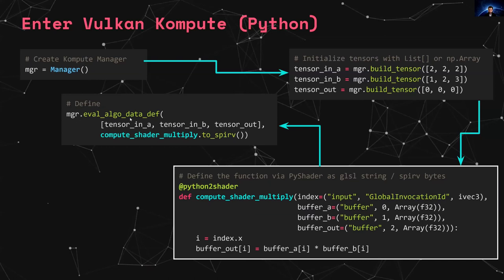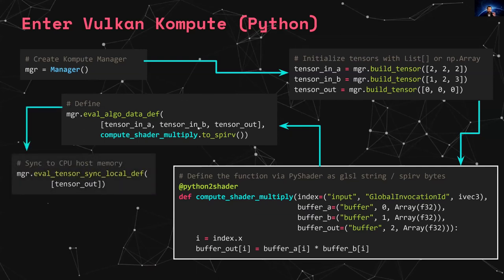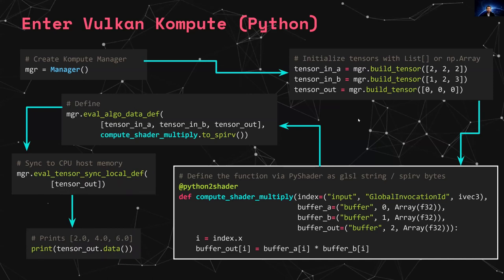This shader runs on the GPU. You run it through the manager, running synchronously using the three tensors and the shader. You can also run it asynchronously for optimizations. Once it's finished running, you copy the data back to make it visible to the CPU and then print it. The output is 2, 4, 6 — that's all there is to it. This is all you need to do the underlying work, though all of that underlying complexity is very useful and relevant for optimizations.